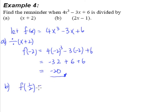And we will get 4 times half raised to the power of 3, minus 3 multiplied by half, plus 6. And that will give us a value of, this is 4 over 8, that will give us half, minus 3 over 2, plus 6.